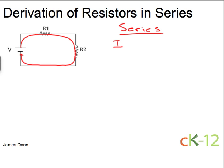So I'll write it like this: the total current I is equal to the current going through the first resistor, which is also equal to the current going through the second resistor.